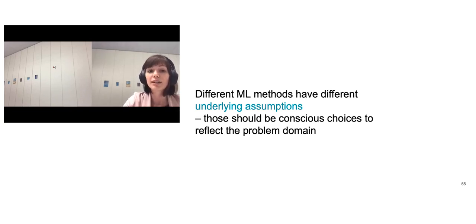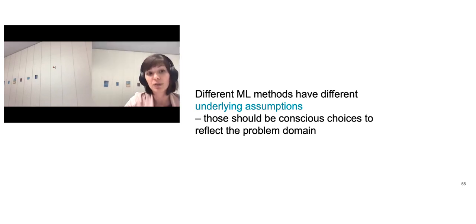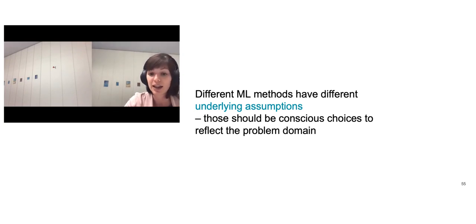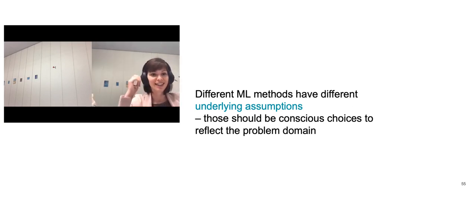Different machine learning methods have different underlying assumptions — some are biological assumptions about what kind of information we need, and some are more subtle and implicit. For example, if we look at K-mers of different lengths, what does that mean for our model, what can it learn and what it cannot. This should be a conscious choice by the method developer and should try to reflect the problem domain as much as possible, so that machine learning methods reflect the problem of interest and are able to predict well on the data we have. With that, I'm returning the floor to Maria.